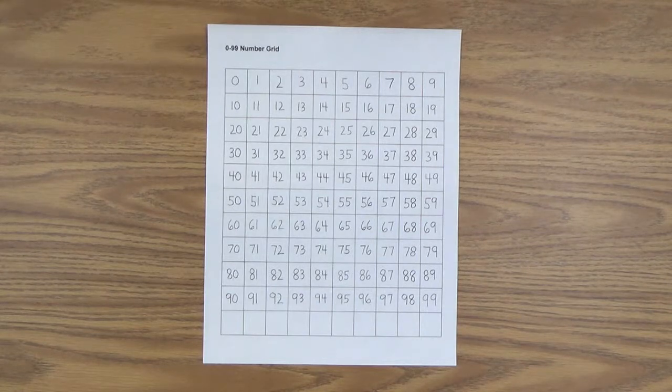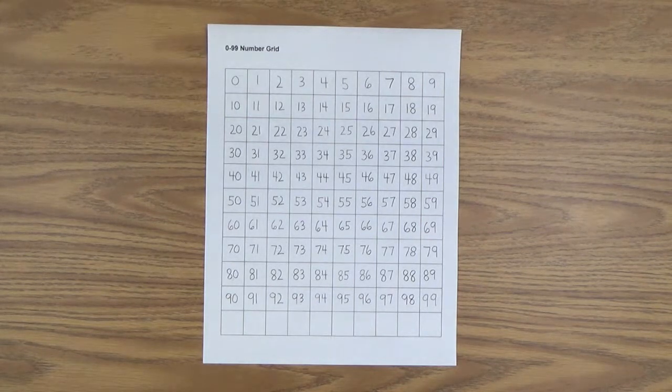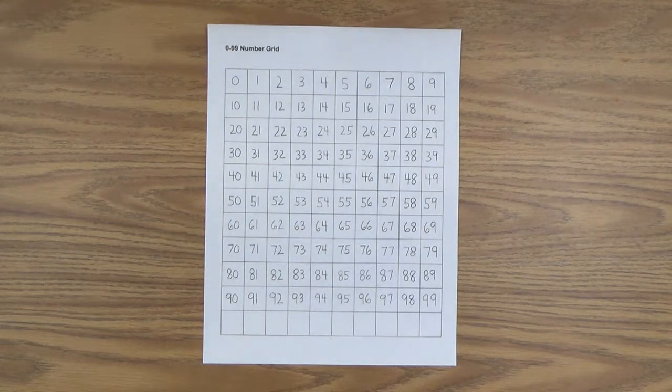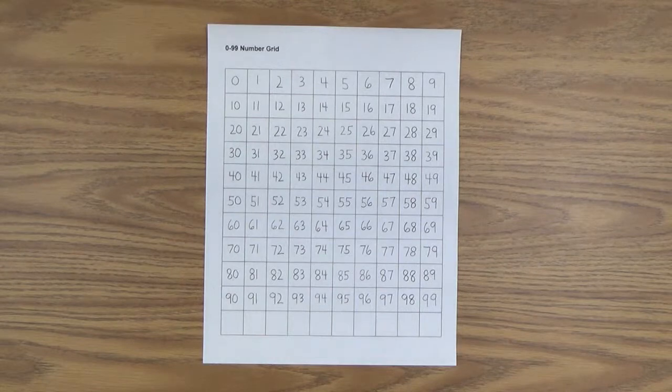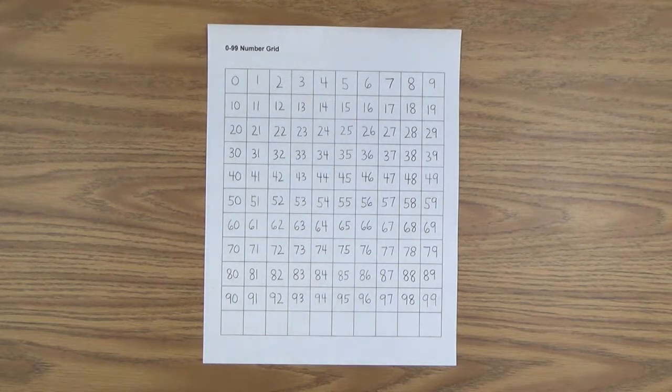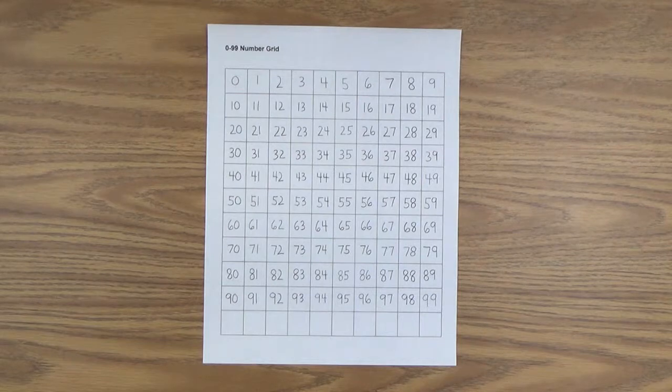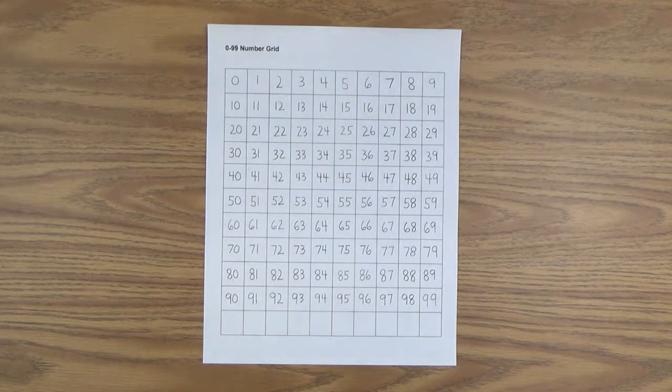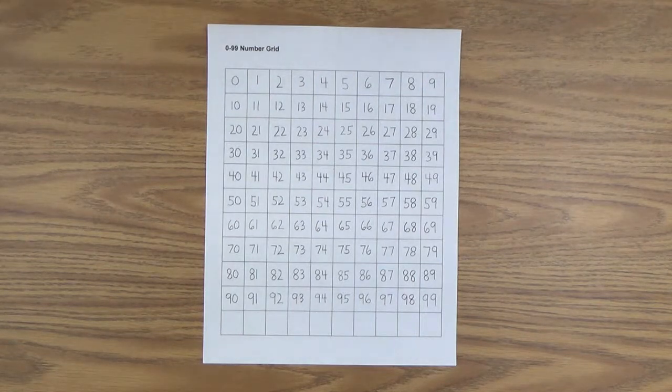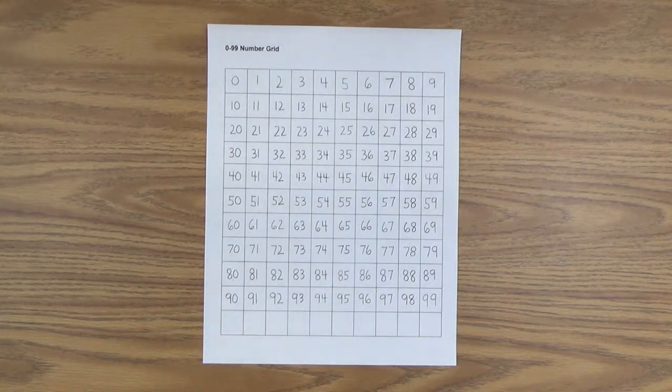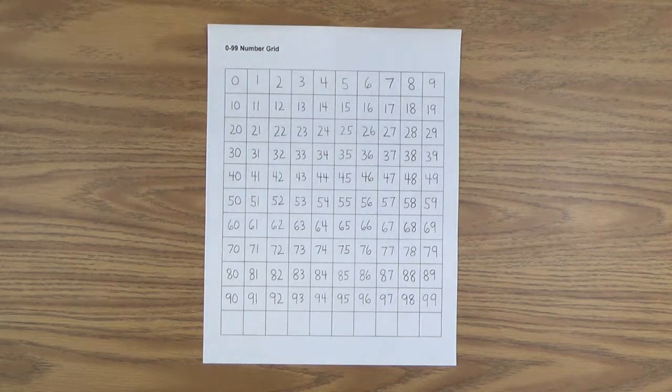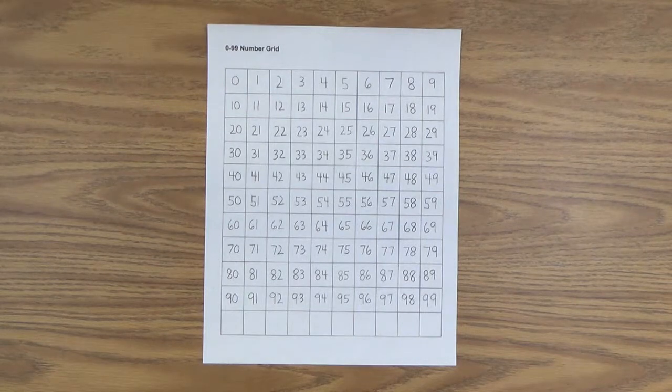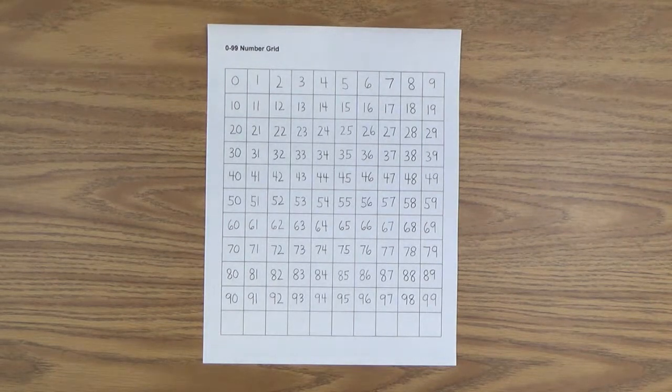There are two more activities that are very good for mastering this number line. And they're not on the video. But if you go to the early gifted manual, go to arithmetic and finally to numeration zero to 100. Two more wonderful activities that you can do with this number grid, you and your child can do with this number grid that will really help her to master it, to be a master of it. And of course, that's what we're going for here.